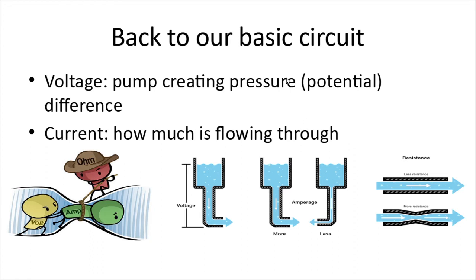Now back to our basic circuit. Think of voltage as a pump creating pressure — that's the potential difference. The current is how much is flowing through. Voltage, which is also referred to as electromotive force or E, is the amount of pressure. Think of a pressure washer: if you use a garden hose, water sprays out nicely. If you hook it up to a pressure washer, it's spraying out a lot harder — it's the same amount of water, the same current, but one is adding a lot more pressure, more voltage.